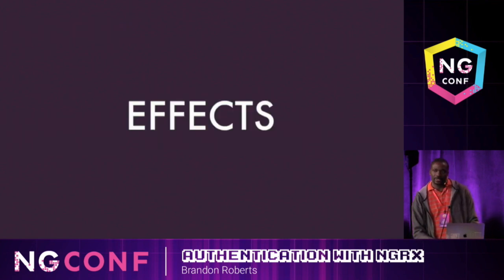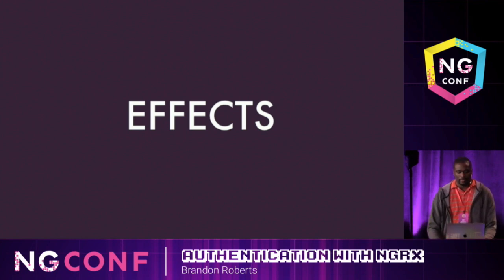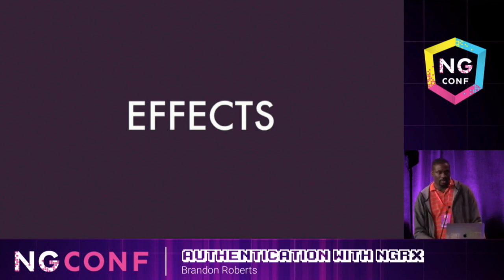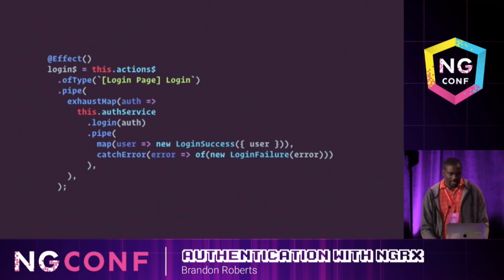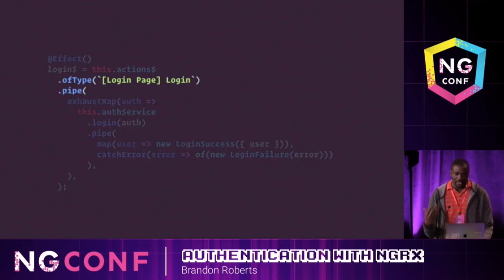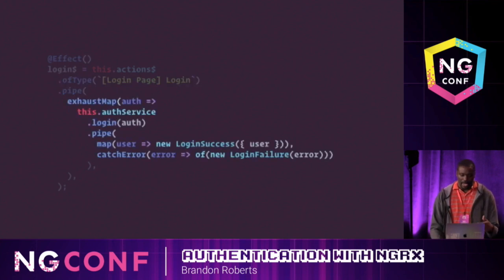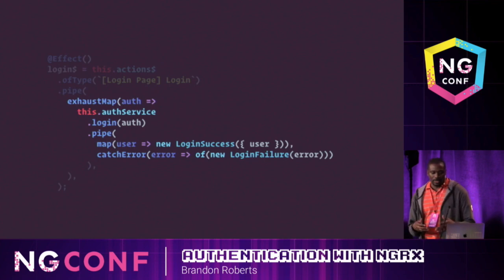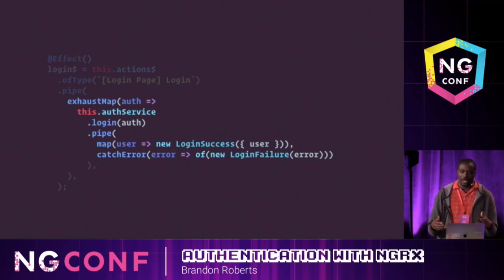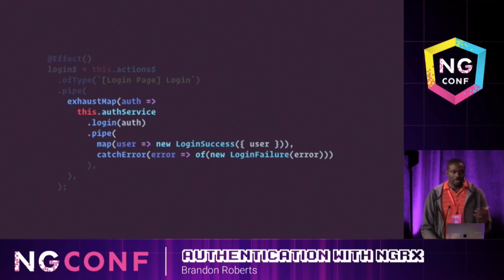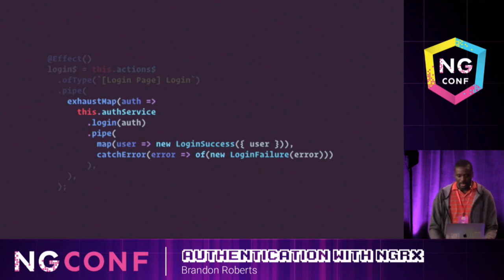Next, let's talk about side effects. Side effects are where you connect your actions to external requests and provide relevant data back to the store based on the result of those requests. Here we process the authentication from login and handle logging out. You can see that I'm listening for an action from the login page to login, taking the user credentials and passing them to the authentication service — this is where you handle your custom authentication logic based on your scheme. As a result of this API request, we return a login success action with the user to populate the store, or we catch an error and map it to a login failure action displayed to the user.